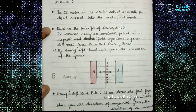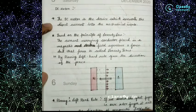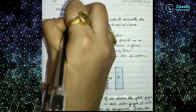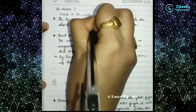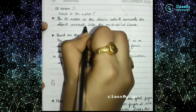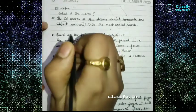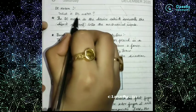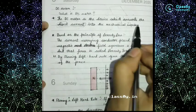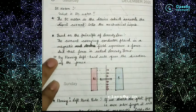Whenever we talk about anything, the first thing that strikes our mind is what basically it is. So what is a DC motor? A DC motor is a device which converts electrical energy into mechanical energy. Since the electrical current is DC, we say it converts direct current into mechanical work.